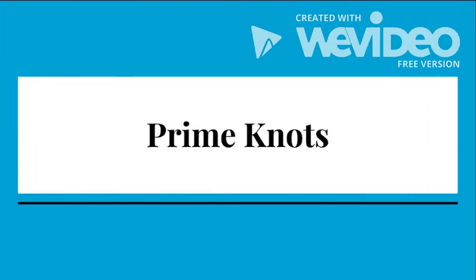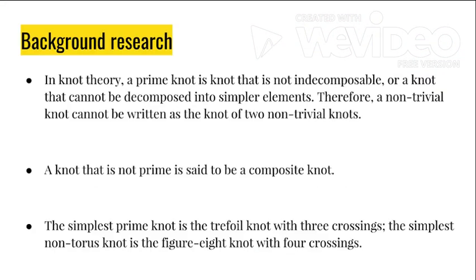Prime knots — what are prime knots? In knot theory, a prime knot is a knot that is indecomposable, or a knot that cannot be decomposed into simpler elements. Therefore, a non-trivial knot cannot be written as the knot sum of two non-trivial knots. A knot that is not prime is said to be a composite knot.